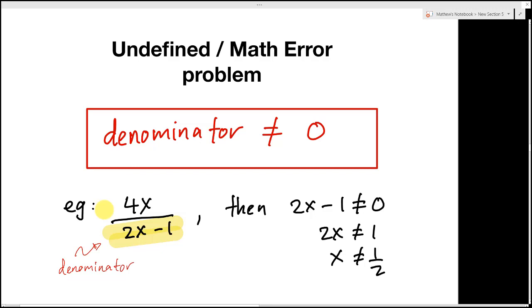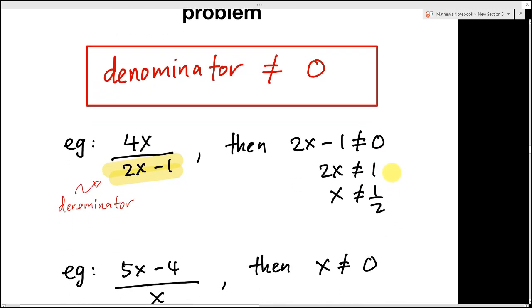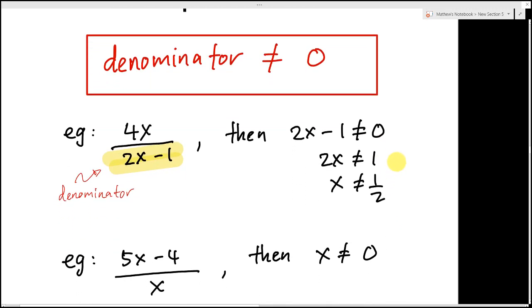This is a one mark question in SPM MF exam about undefined or math error problems. Basically, only one idea you need to understand: the denominator can never be zero. If you do not believe me, you can take out your calculator.